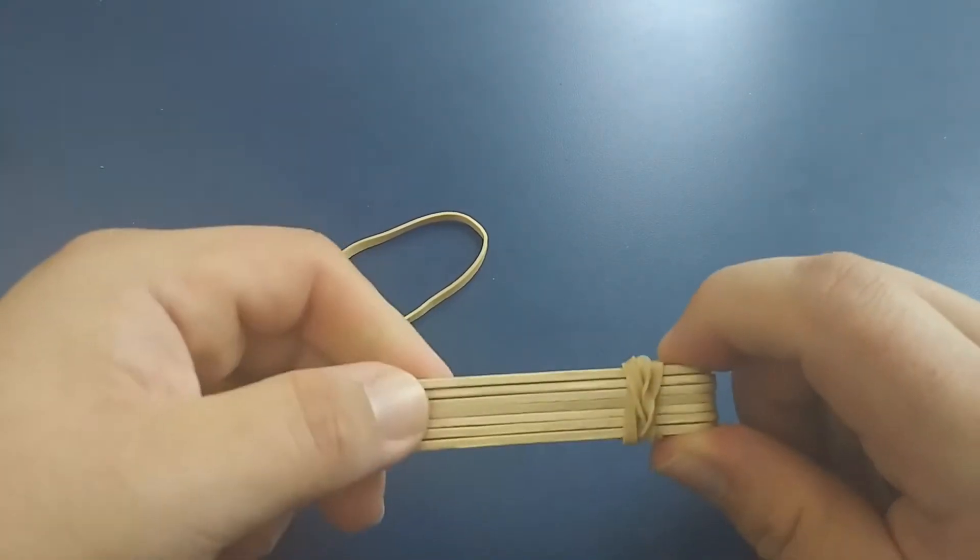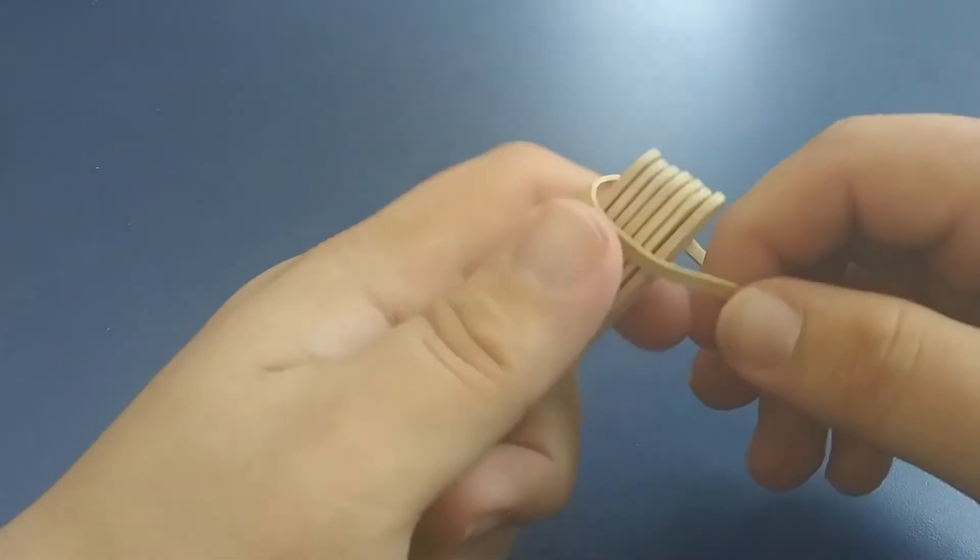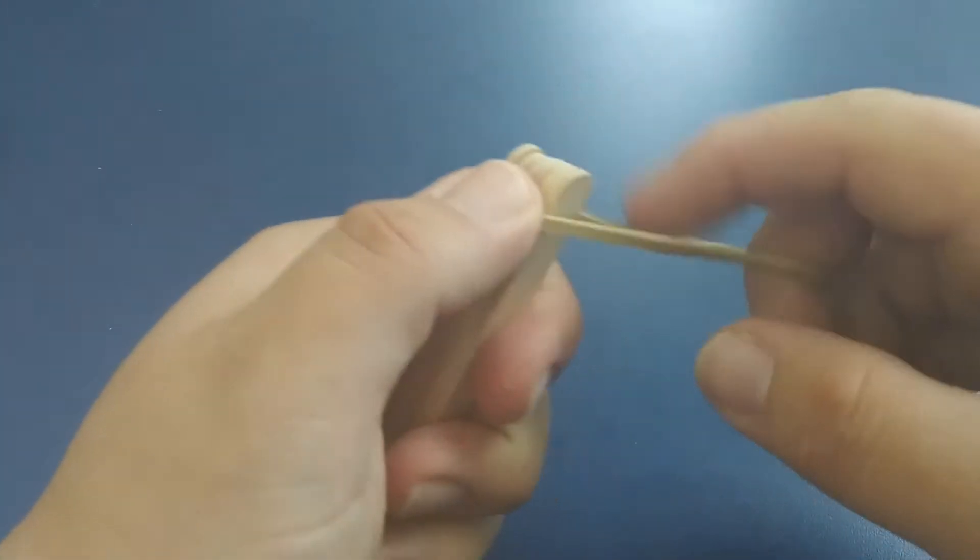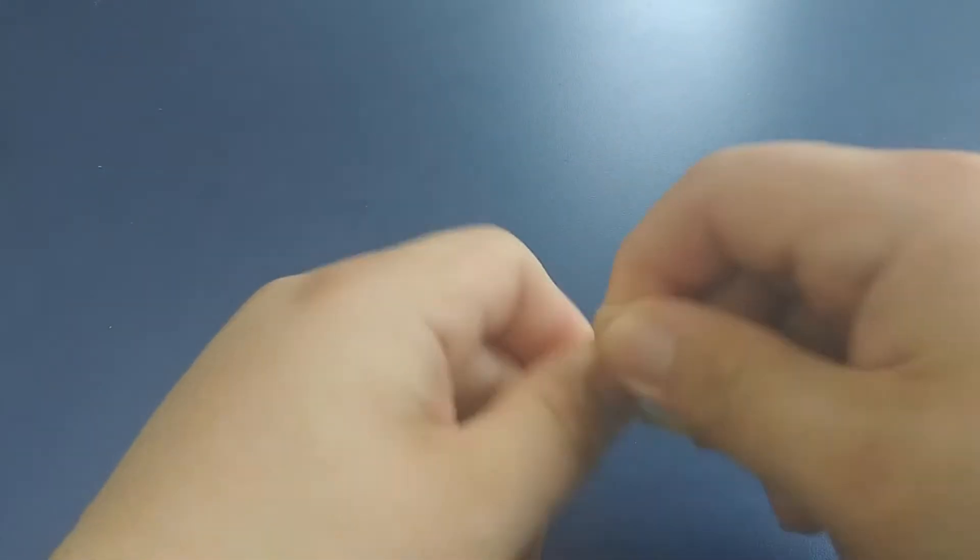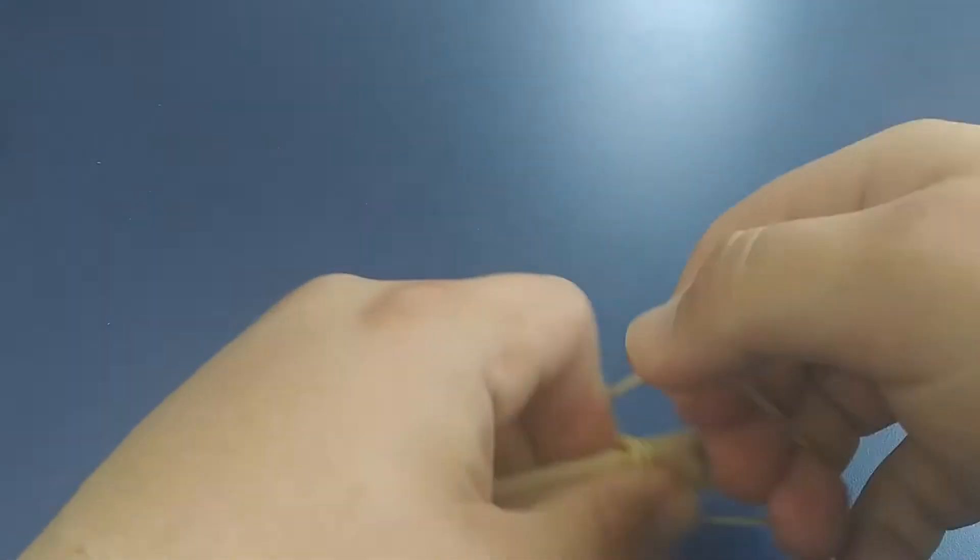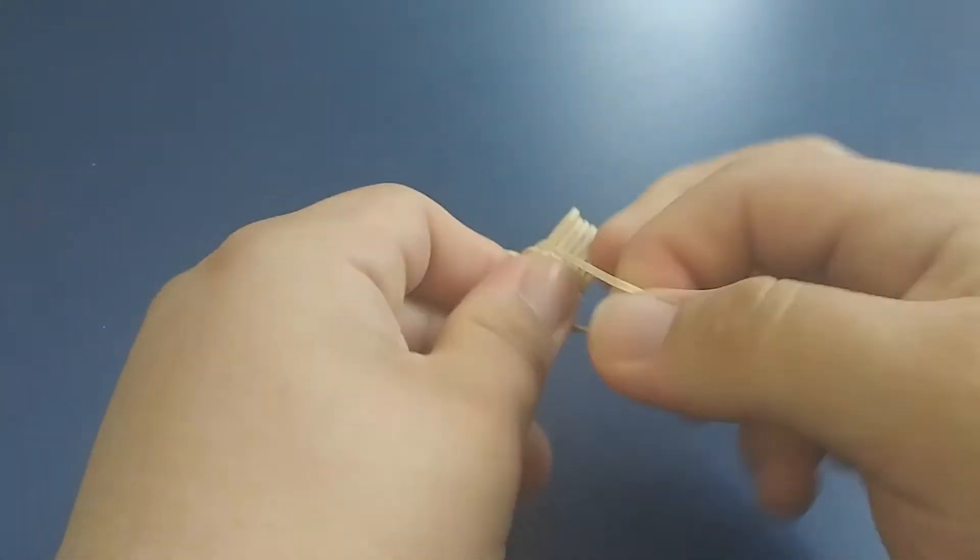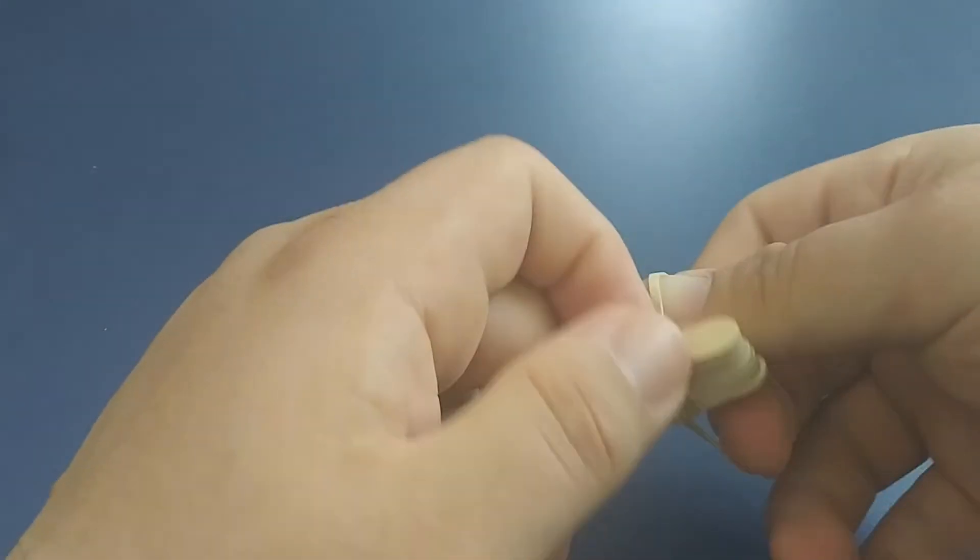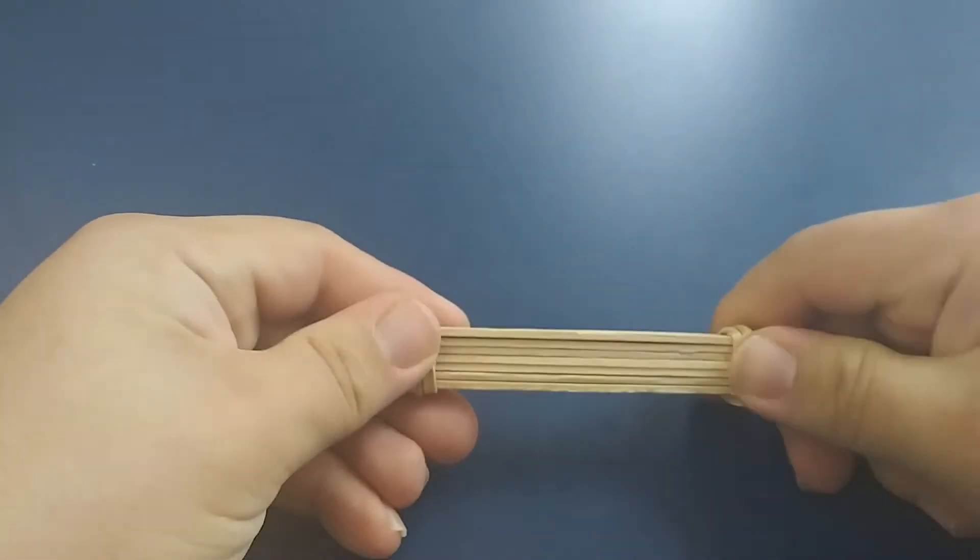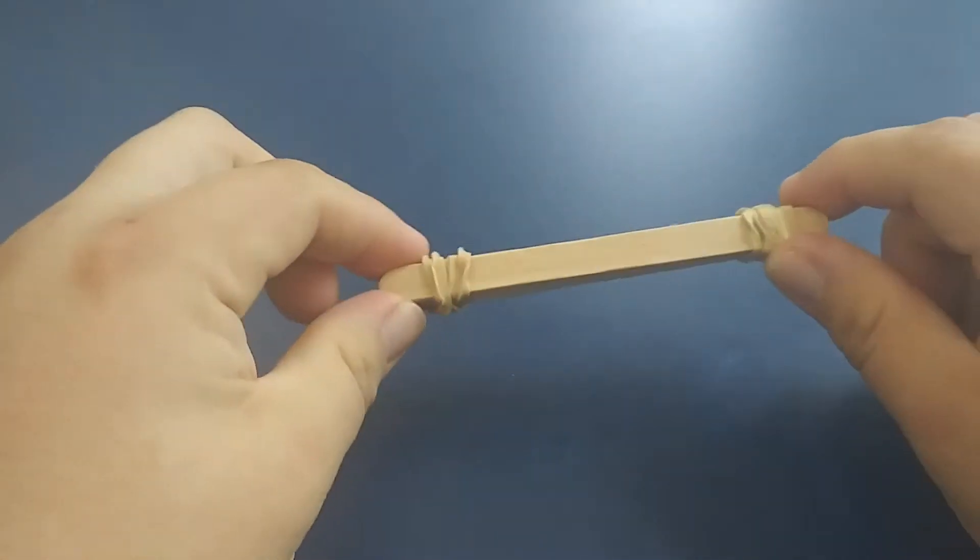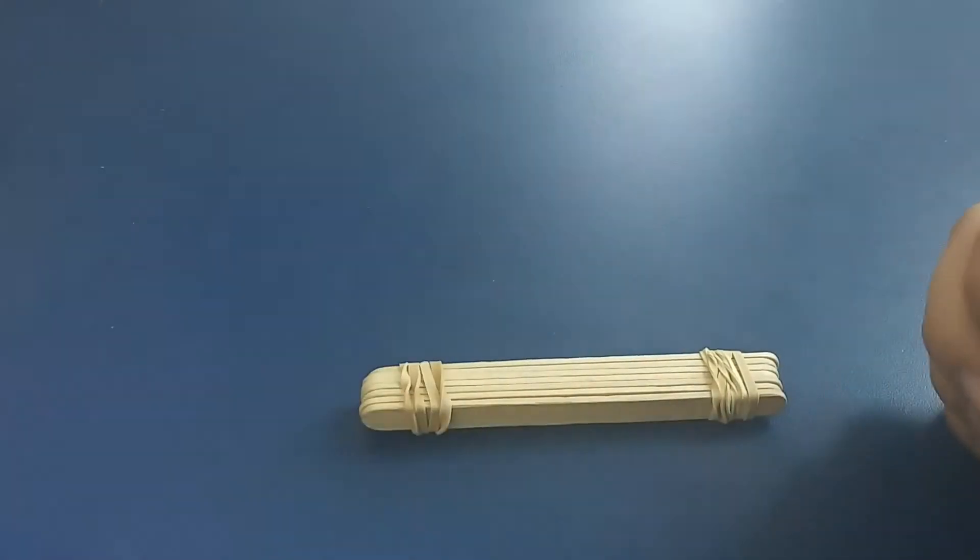Next we're going to grab the other rubber band and do the other method where we take the other end and just wrap it around kind of like a rope. This one takes a lot longer because you have to wrap around a lot more. Then to tie it off, just flip it over just like that. Now we have our arm.